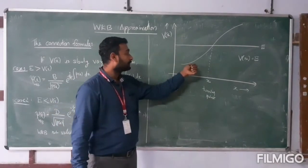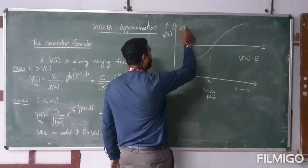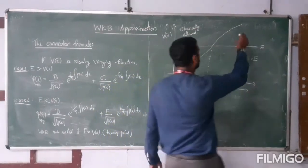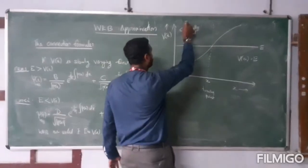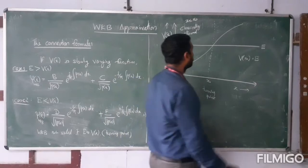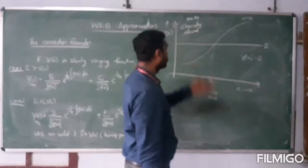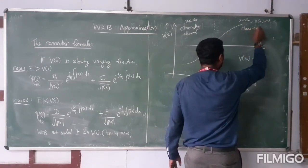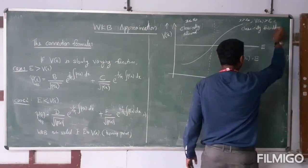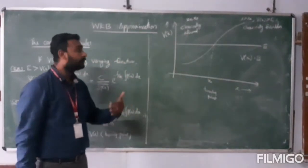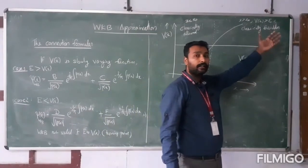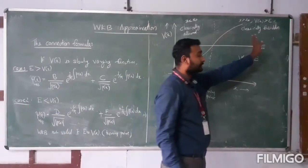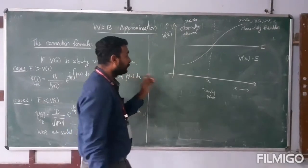For x less than x0, the points where potential energy is less than E — those regions are called the classically allowed region. For x greater than x0, the potential is greater than E, and these regions are called the classically forbidden region. It is classically forbidden because classically that is not permissible, but in quantum mechanics the system can have total energy less than the potential. So that is why these regions are called classically forbidden, and these are called the turning point.